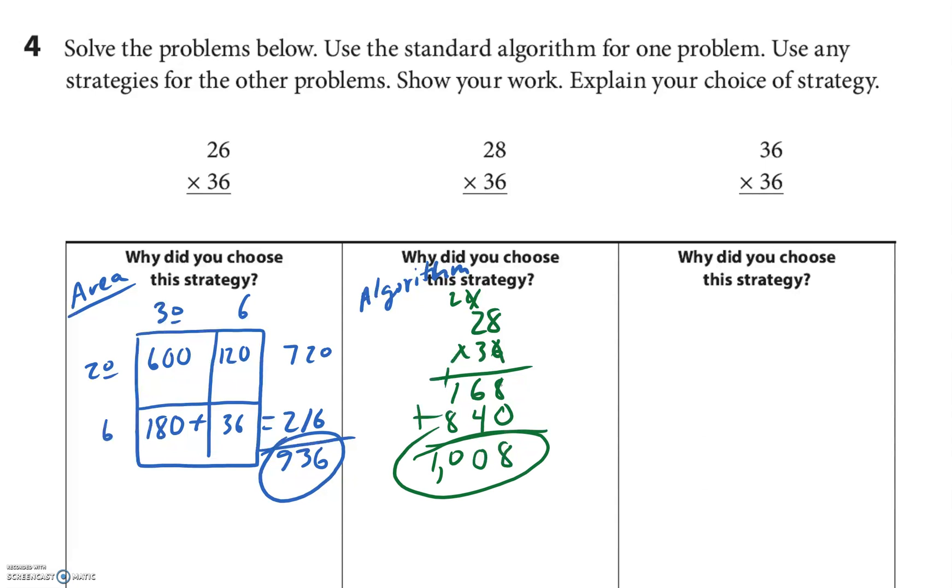Next one I think I'm gonna use a ratio table for this one. I'm gonna go 1 by 36. Let's go 10—360. I'm gonna go 5, half of 10, is 180.